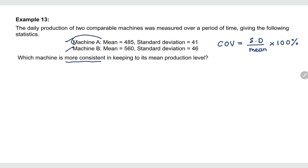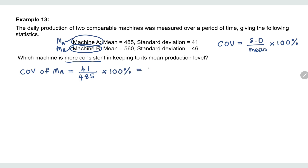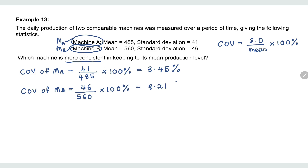I will define Machine A as MA and Machine B as MB. The coefficient of variation of MA equals the standard deviation 41 divided by the mean 485, times 100%. For MB, the coefficient of variation equals the standard deviation 46 divided by the mean 560, times 100%, giving us 8.21%.